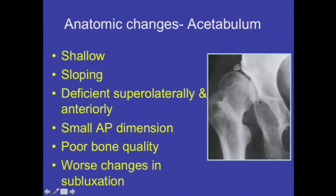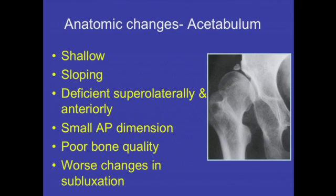If you see a false acetabulum and a true acetabulum, always try to restore the center of rotation — bring the center of rotation down to avoid the false acetabulum, because the maximum bone stock remains in the true acetabulum. The bone stock in the false acetabulum is very poor, and leaving a superior center of rotation increases joint reaction forces and increases chances of failure when the cup is placed in the false acetabulum.